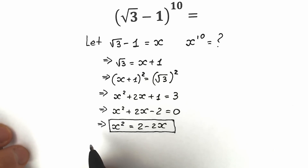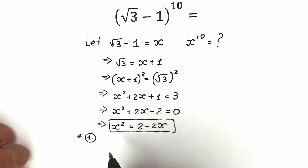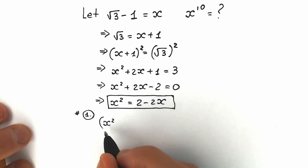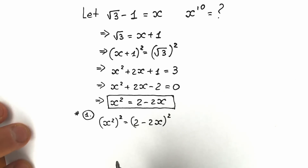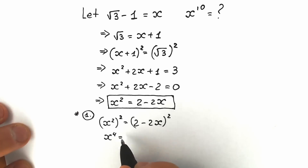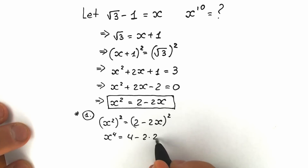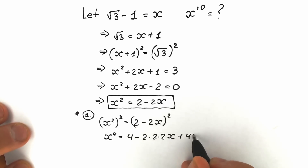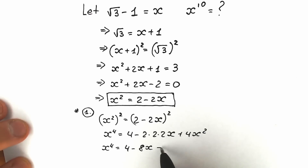Let's start with x to the fourth power by raising x squared to the second power. So x squared raised to the second power equals 2 minus 2x raised to the second power. As a result, x to the fourth power equals — using the basic school formula a squared minus 2ab plus b squared — we get 4 minus 2 times 2 times 2x plus 4x squared, which simplifies to 4 minus 8x plus 4x squared.